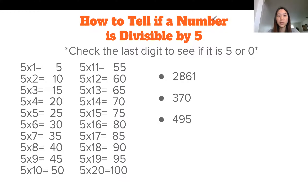How can you tell if a number is divided by 5? All you have to do is check to see if the last digit is either a 5 or a 0. The reason this works is because if you look at the multiplication table for 5s, you'll notice that the last digit is always either a 5 or a 0.